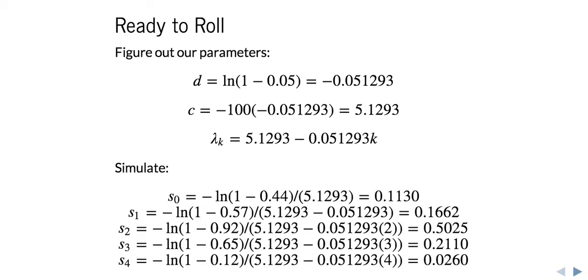Using the previously derived inverse CDFs, we get these values of s_0 to s_4. So in the denominators, we have lambda_k and 0.44, 0.57 and so on. Those are the uniform values that we have on the first slide.